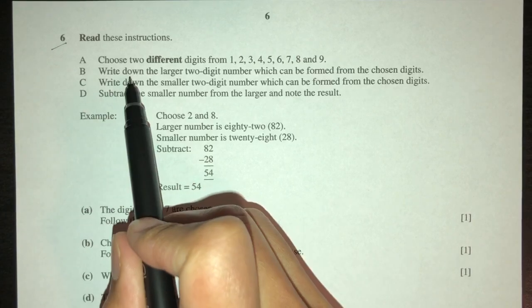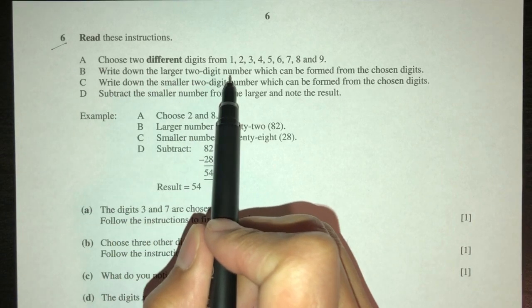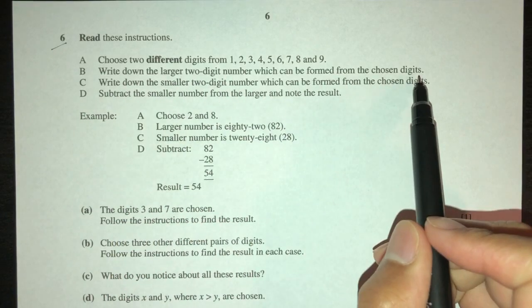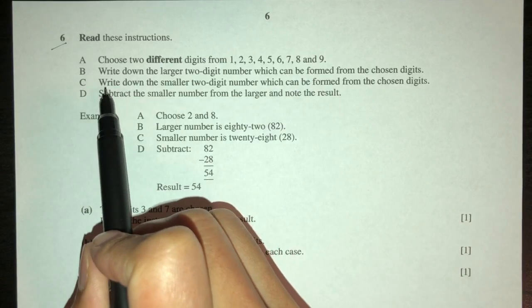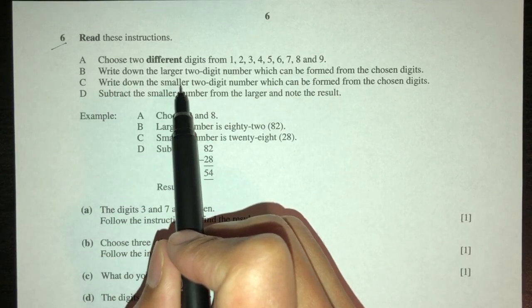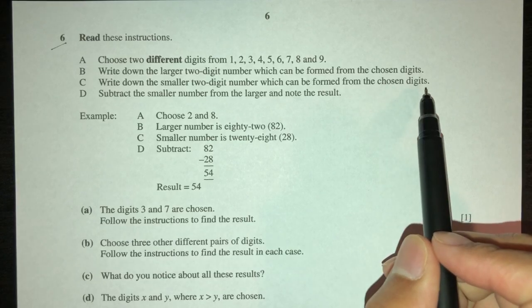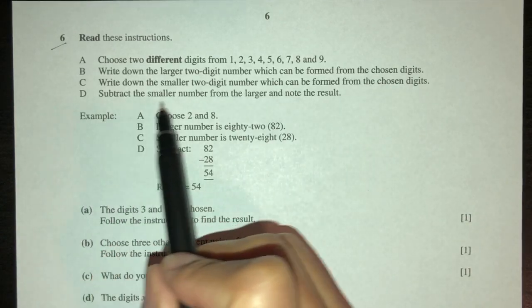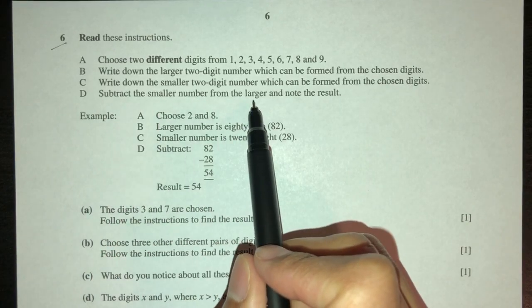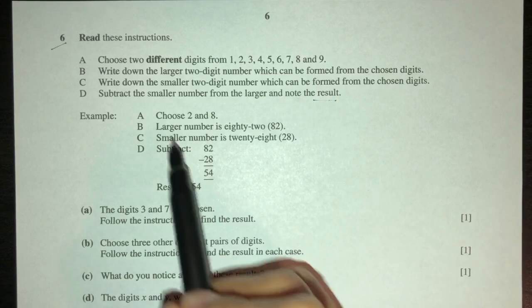Part B: write down the larger two-digit number which can be formed from the chosen digits. Part C: write down the smaller two-digit number which can be formed from the chosen digits. Part D: subtract the smaller number from the larger and note the result.